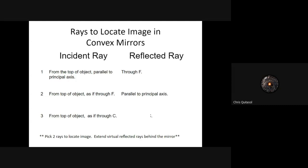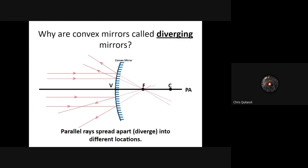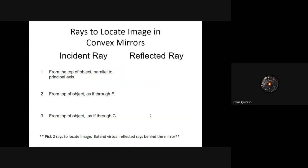Going through F, it will still reflect parallel to the principal axis. And from the top of the object as if through C, it will still reflect back through C. However, as I stated, all of them will be those dotted lines — those virtual rays — they are not actual light rays reflecting in that manner. The rules all still stay the same.